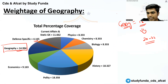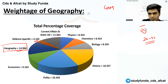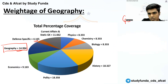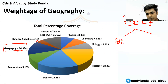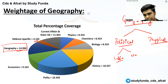Geography is basically divided into political and physical geography — covering world political, world physical, India physical, and India political geography.